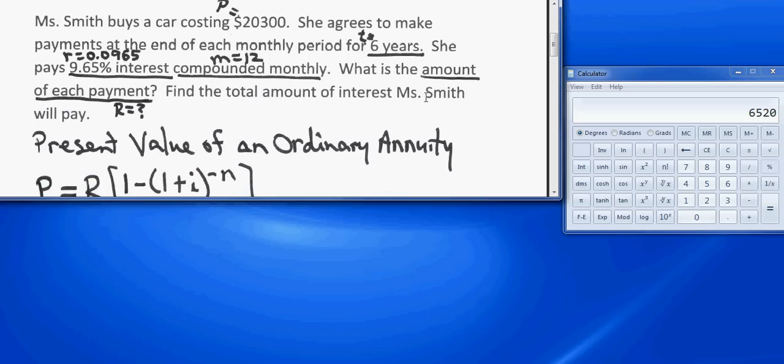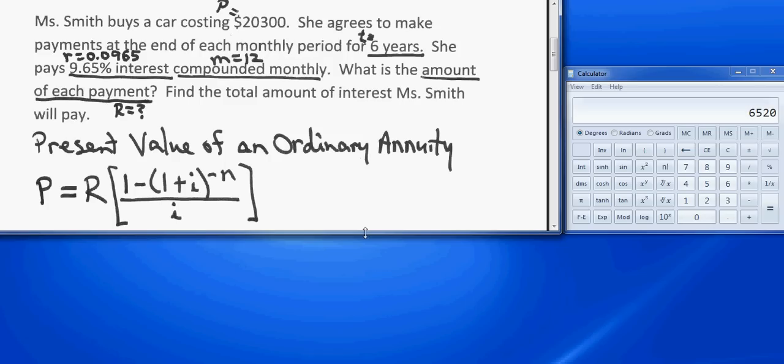The cost of the car is the present value, that's $20,300. The payments are for 6 years, so little t is 6. The interest rate is 9.65%, so little r as a decimal is 0.0965. It's paid and compounded monthly, so m is 12, and we're looking for the amount of each payment, so that means we're looking for capital R, the periodic payment.